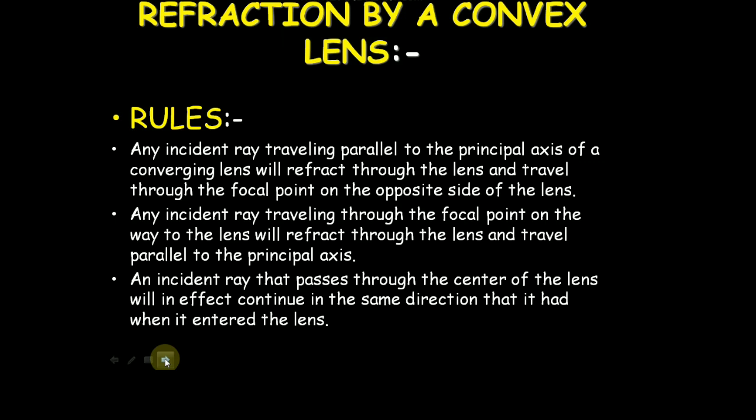An incident ray traveling through the focal point on the way to the lens will refract through the lens and travel parallel to the principal axis. An incident ray that passes through the center of the lens will in effect continue in the same direction that it had when it entered the lens.